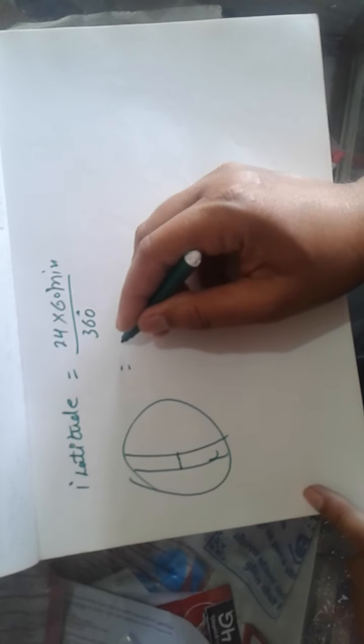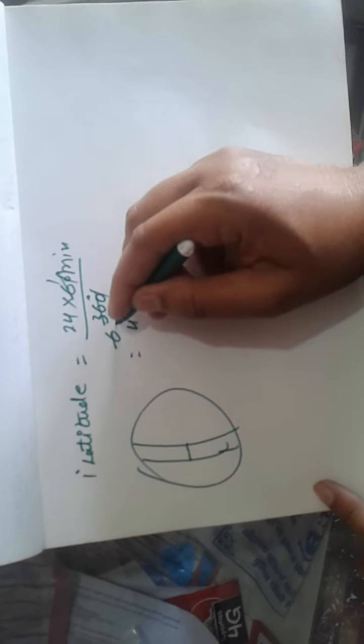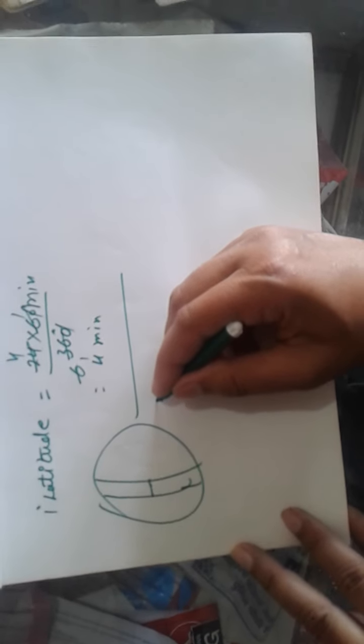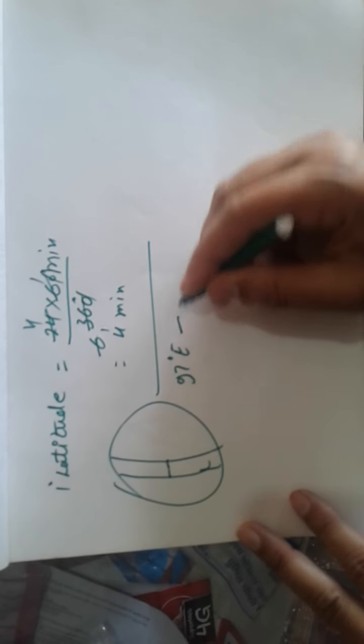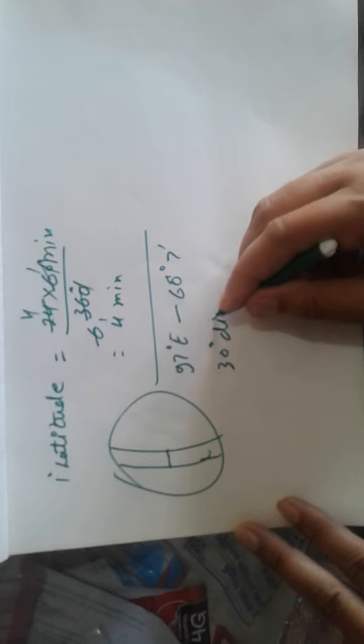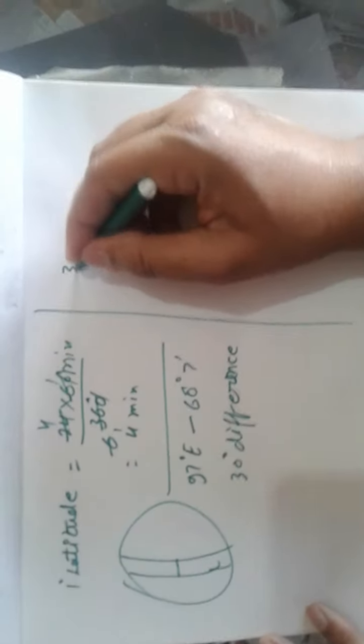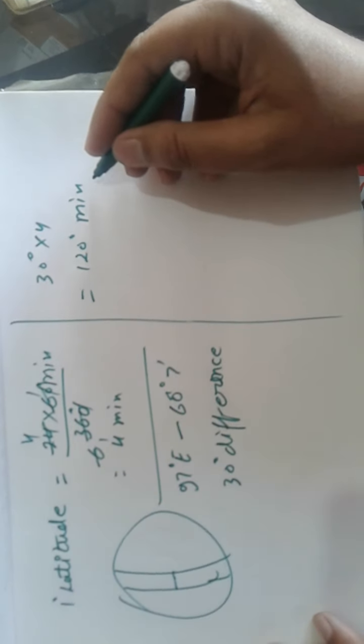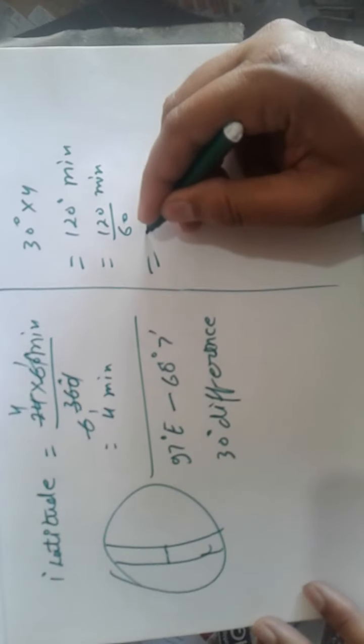One degree longitude equals 4 minutes. Now, as India extends from 97 degrees to 68 degrees 7 minutes from Arunachal Pradesh to Gujarat, that's approximately 30 degrees difference. So as we calculate: 30 degrees multiplied by 4 equals 120 minutes difference. 120 minutes divided by 60 equals 2 hours.